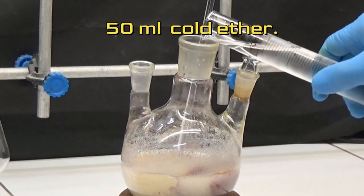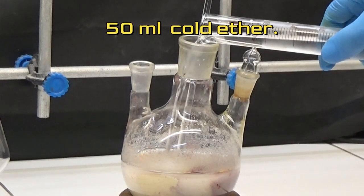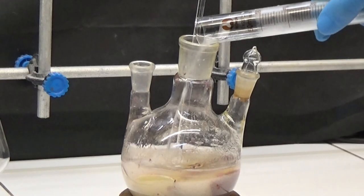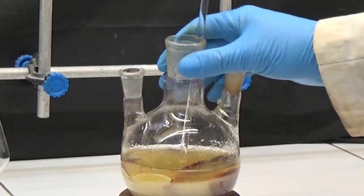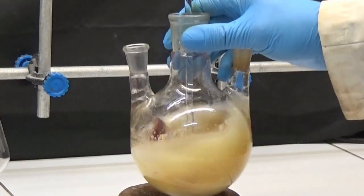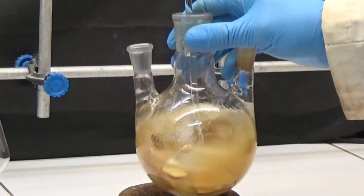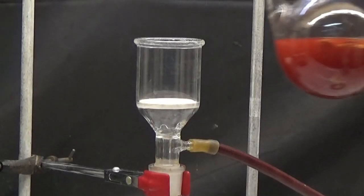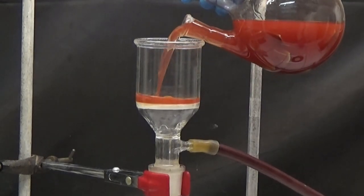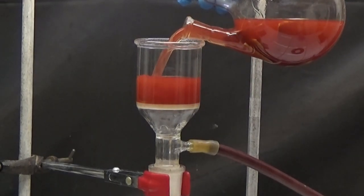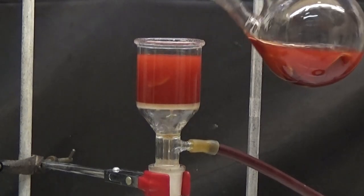Add 50 milliliters of cold ether. Filter the contents of the flask by suction to eliminate the non-reacted phosphorus. 4.2 grams of phosphorus were recovered.